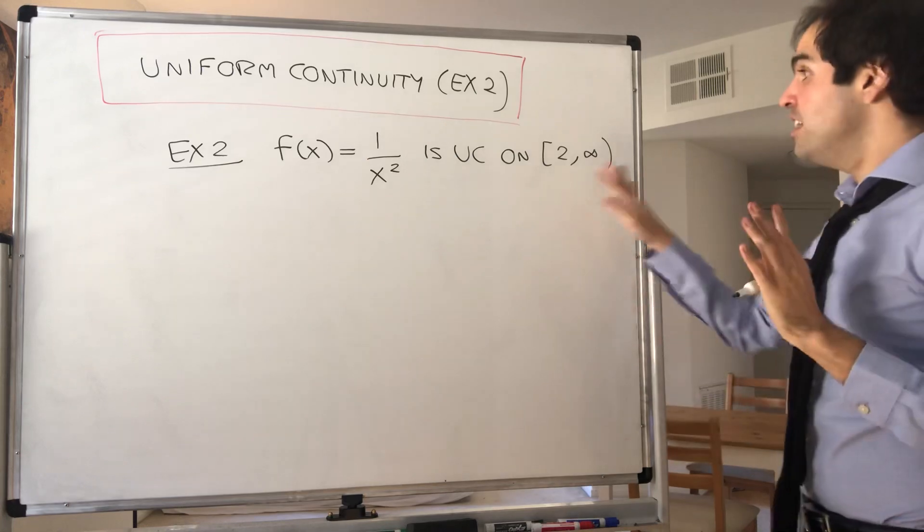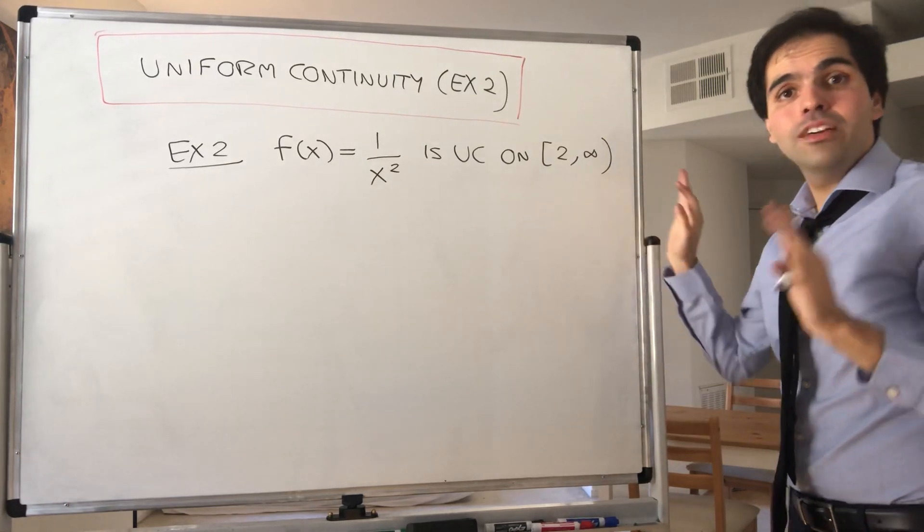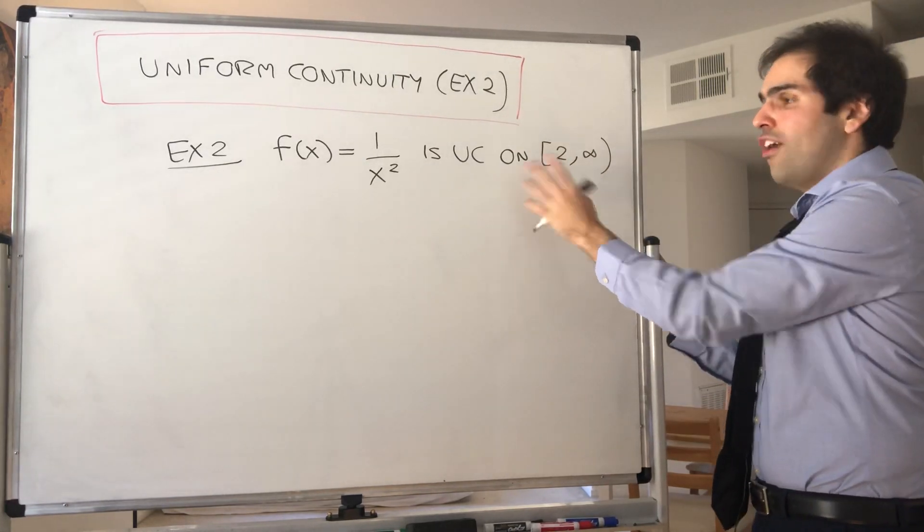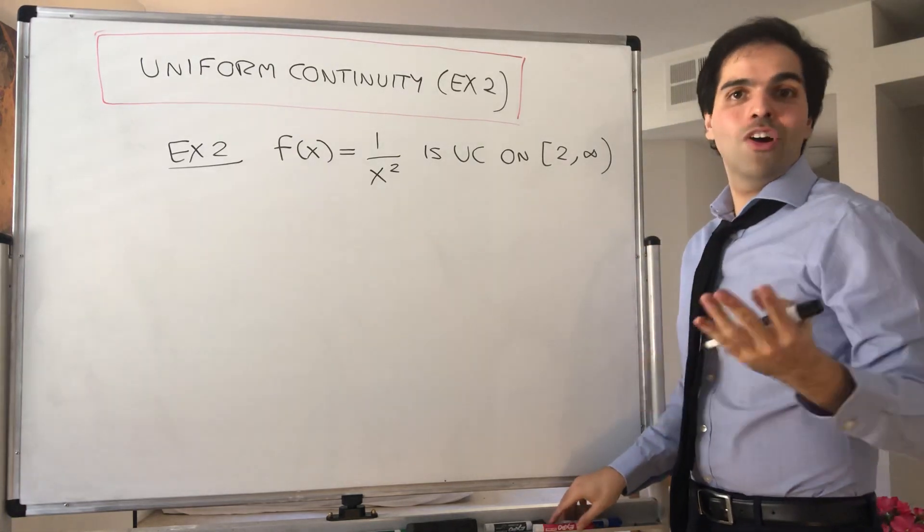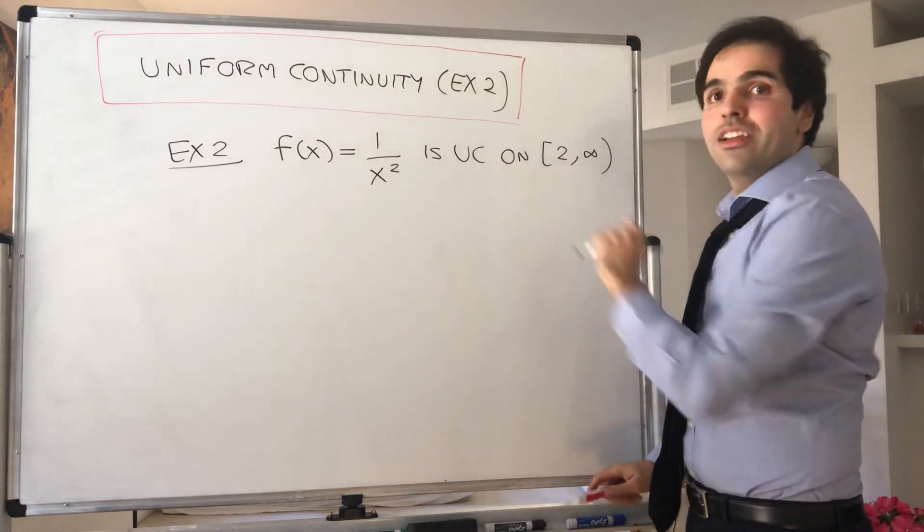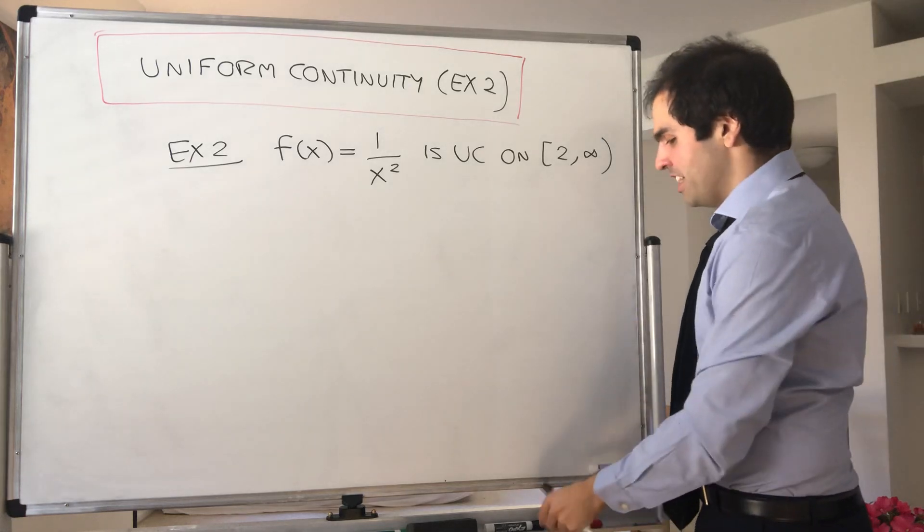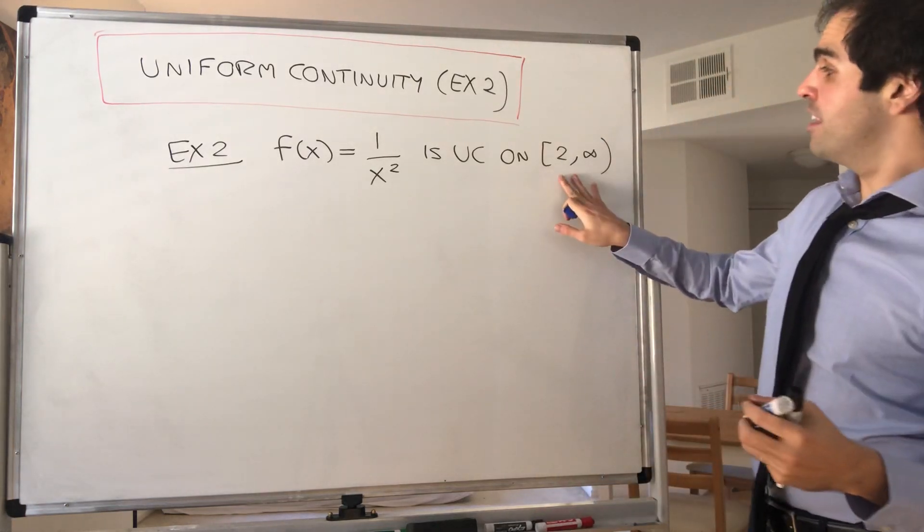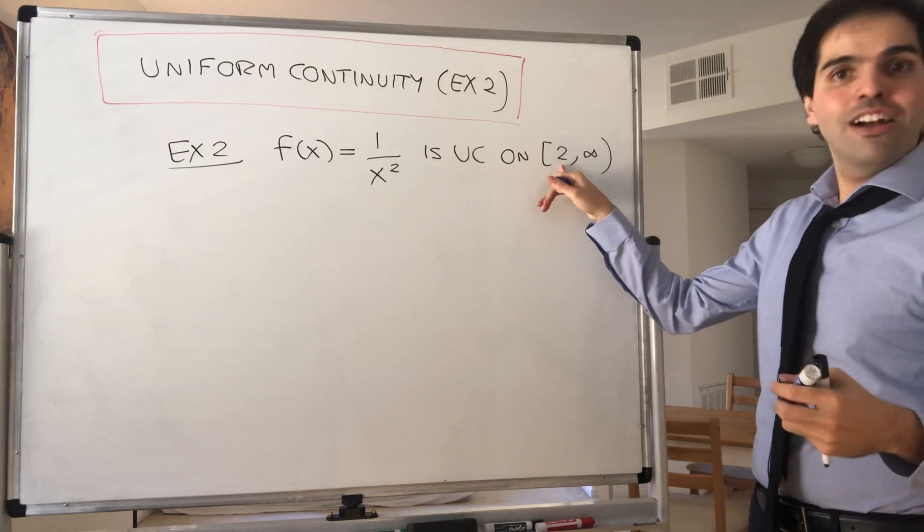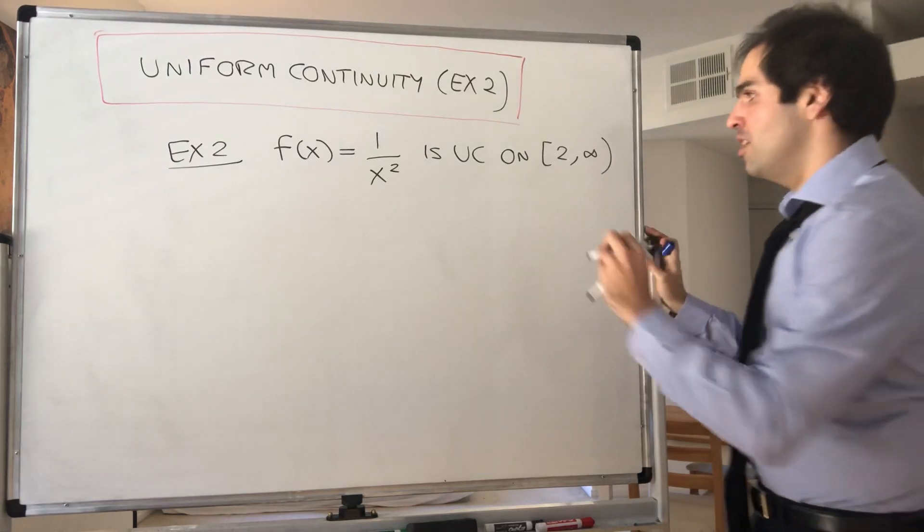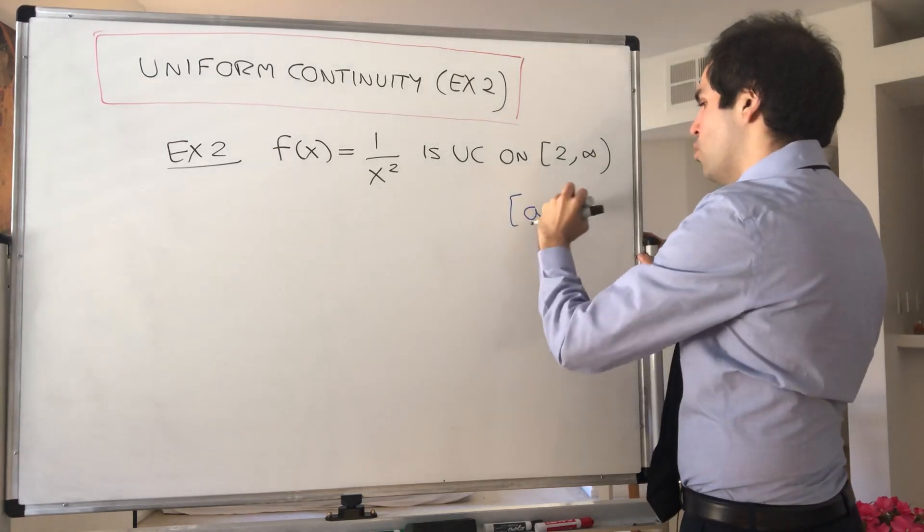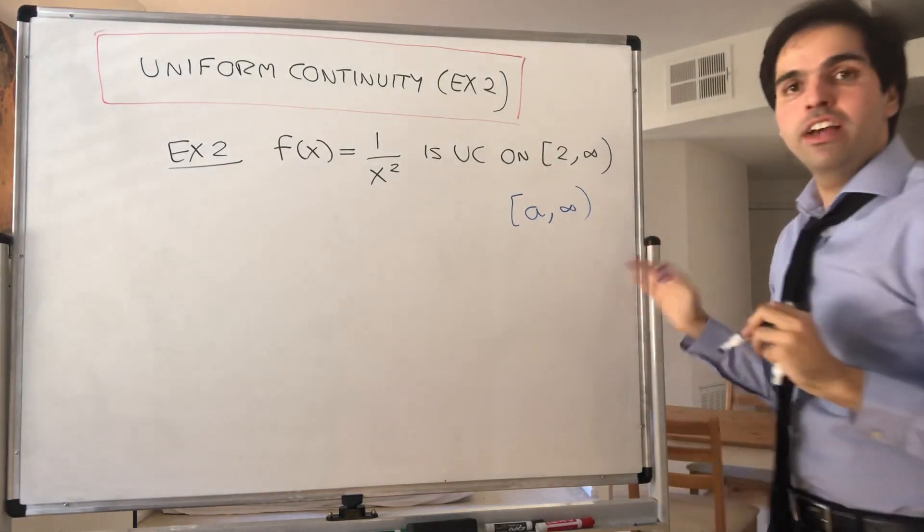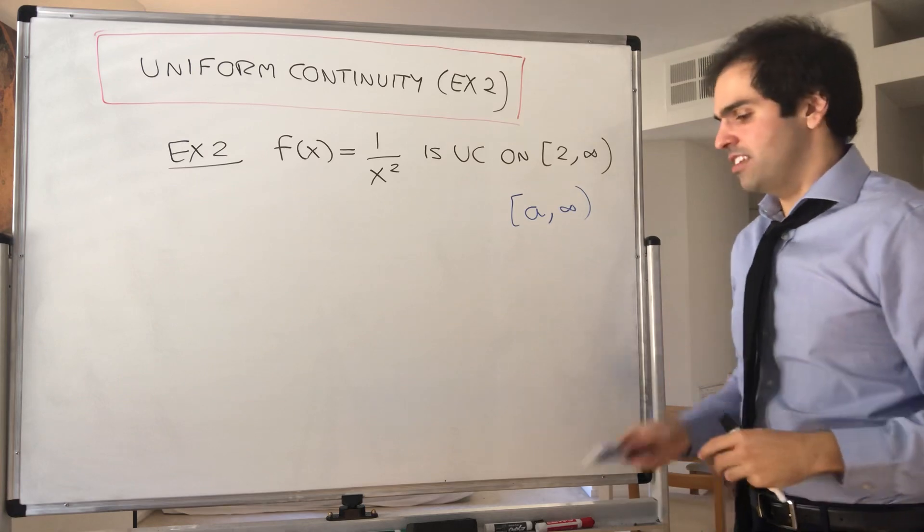Again, the interval is very important because this function is not uniformly continuous on a different interval, and we'll show a variation in another video. The fact that we have two here wasn't very special. The same proof works for the interval where a is positive.